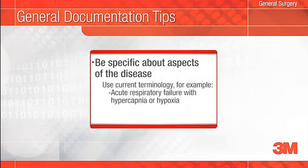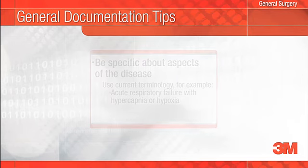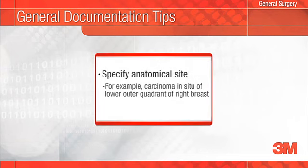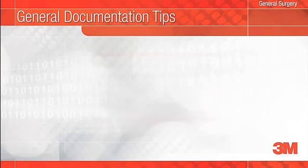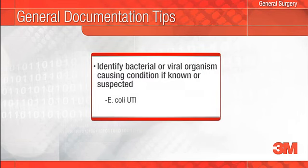Think about the most current terminology to describe a condition or different aspects of the disease. For example, acute respiratory failure with hypercapnia or hypoxia. Precisely designate anatomical site, such as carcinoma in situ of lower outer quadrant of right breast. Identify the bacterial or viral organism causing a condition, if known or suspected, such as E. coli UTI.